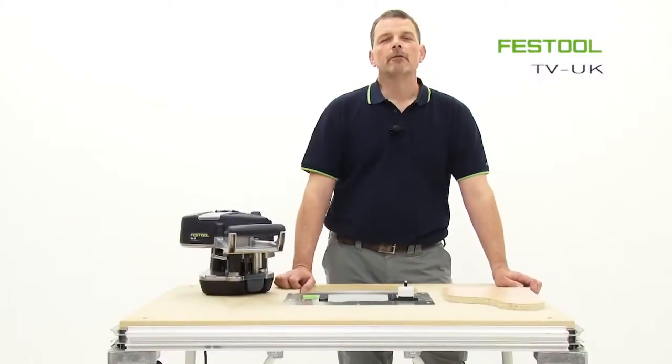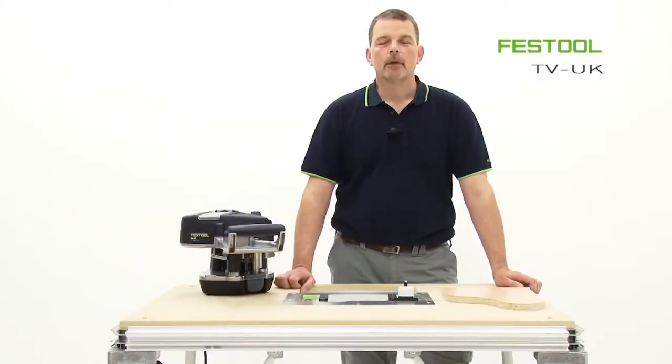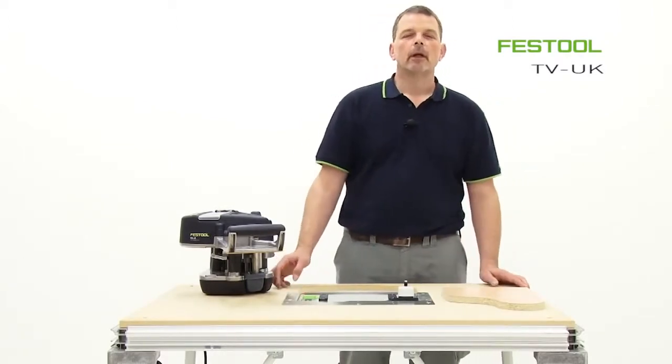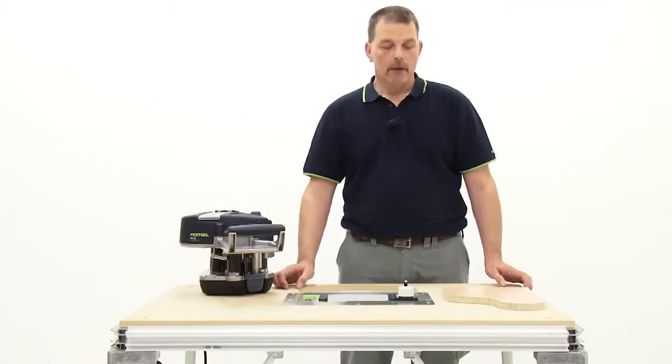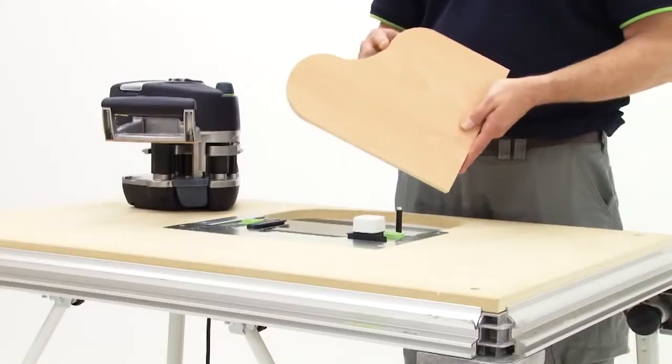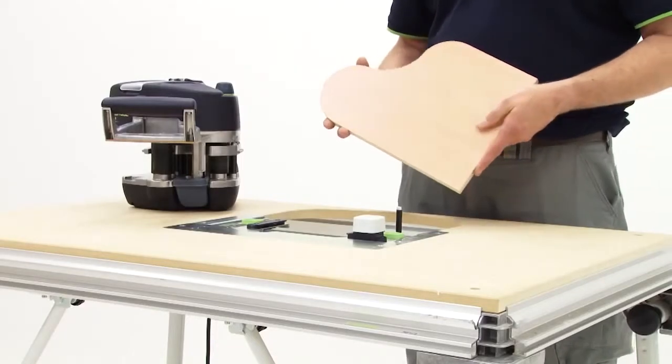Hi, my name is Phil and welcome to Festool TV UK. Today I'd like to talk to you about an application which we can use a Conturo KA65 for, and that would be for applying edgings to internal and also for external radiuses.